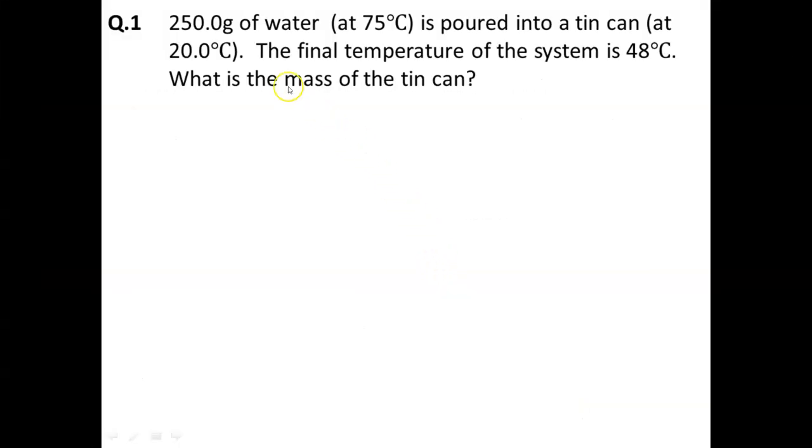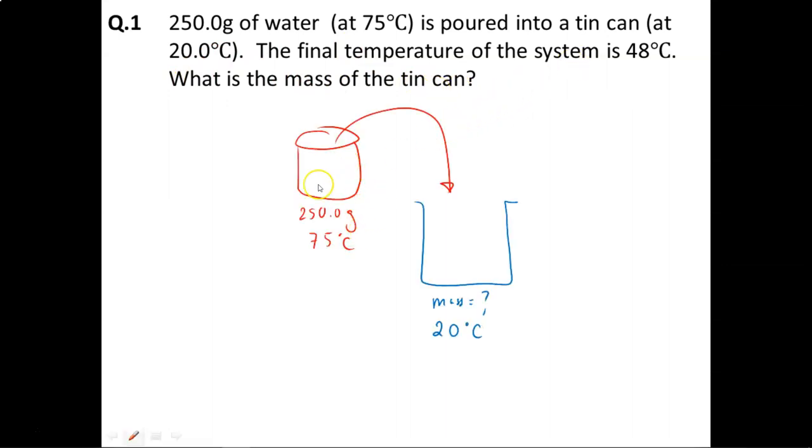So let's take a look at a sample question. If I have 250 grams of water at 75 degrees Celsius, and then I pour it into a tin can at 20 degrees Celsius, the final temperature of the system is found to be 48 degrees Celsius. So what is the mass of the tin can? So in this instance, we are pouring hot water at 75 degrees Celsius into a colder tin can at 20 degrees Celsius.